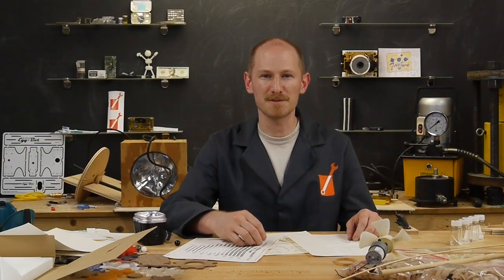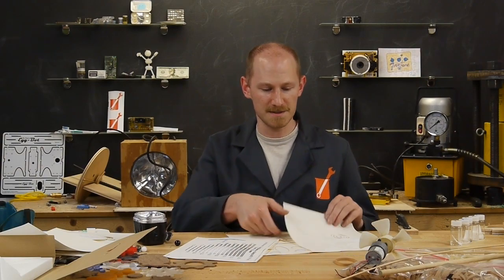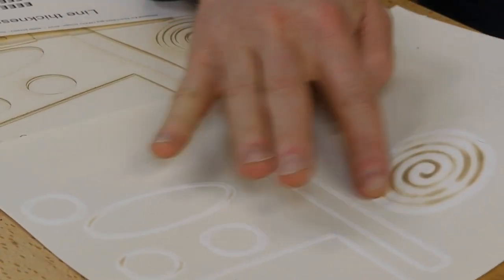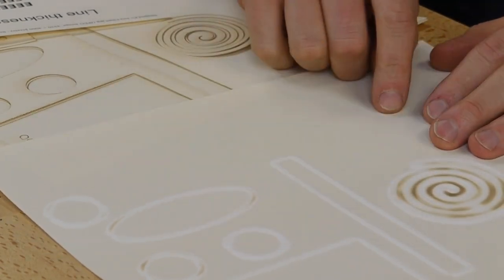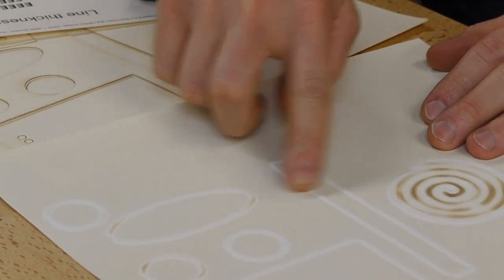Today on Applied Science I'd like to talk about this interesting material that I recently learned about at Maker Faire. It's a paper that's coated with a special coating that swells up when you heat it. So you can make patterns on this paper and you can sort of feel them.